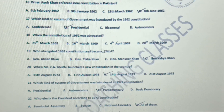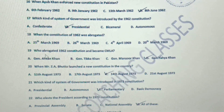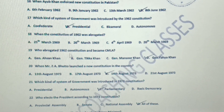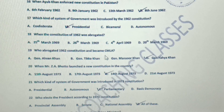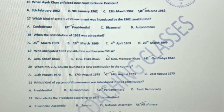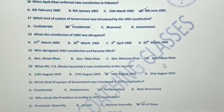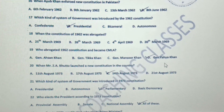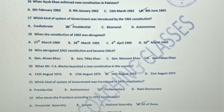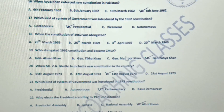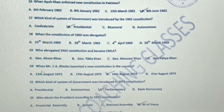Question number 19: Who abrogated the 1962 constitution and became CMLA? Yahya Khan abrogated the constitution of 1962 and became CMLA.